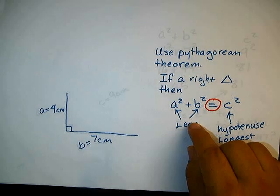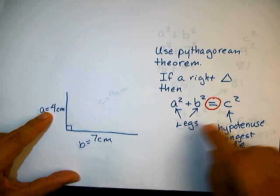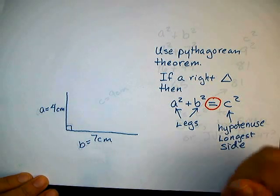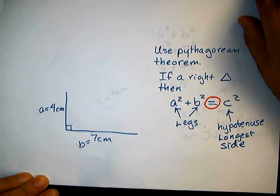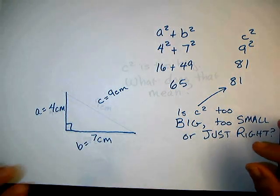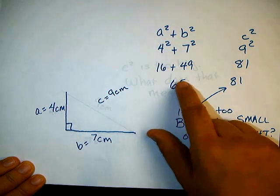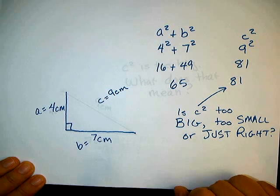So I'm going to see if the two legs, which are the two short sides, when I square them and sum them, if it's equal to the hypotenuse, which in this case will be my 9 cm side. So substituting in the values, I have a squared plus b squared, so 4 squared plus 7 squared, and I get 16 and 49. My sum is 65.